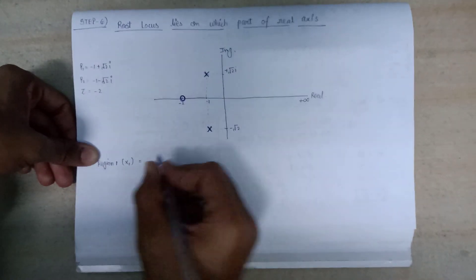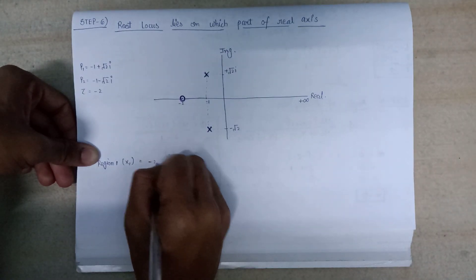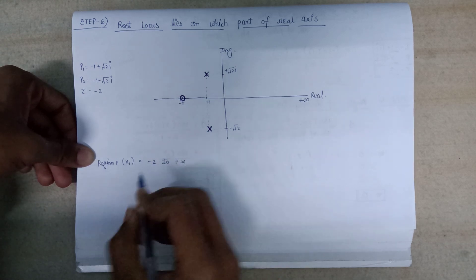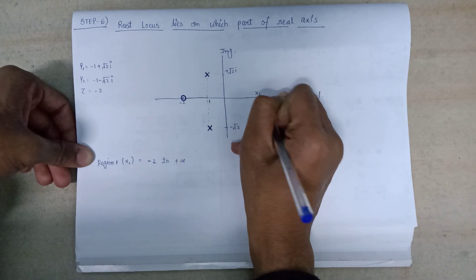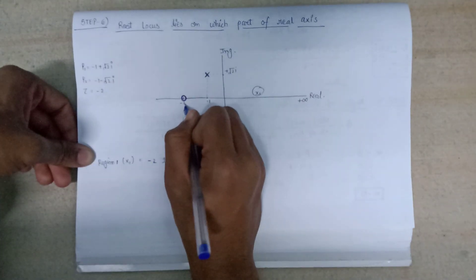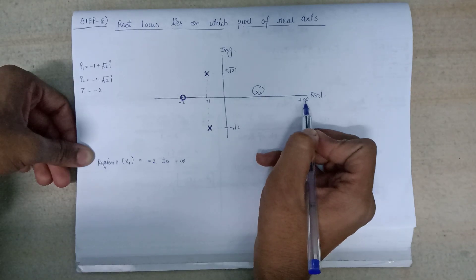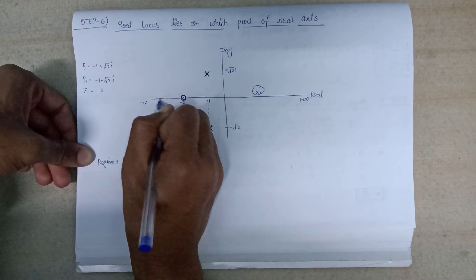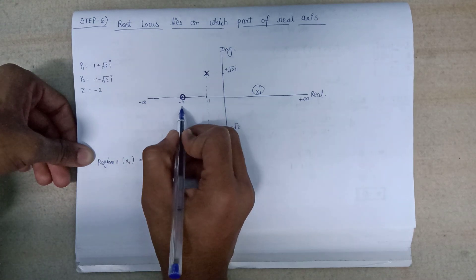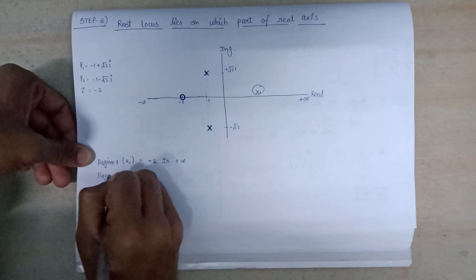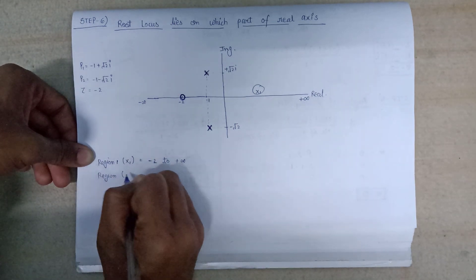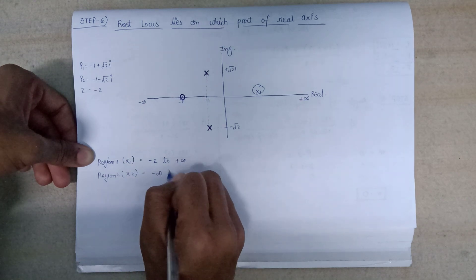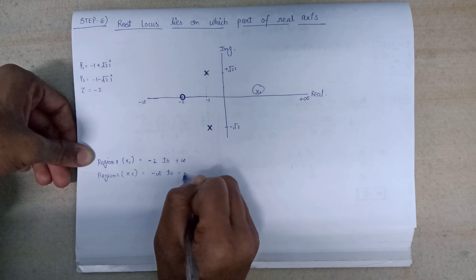Region 1 is represented by x1, which lies from minus 2 to plus infinity. Region 2 lies from minus infinity to minus 2.